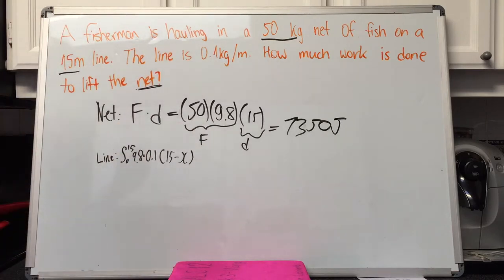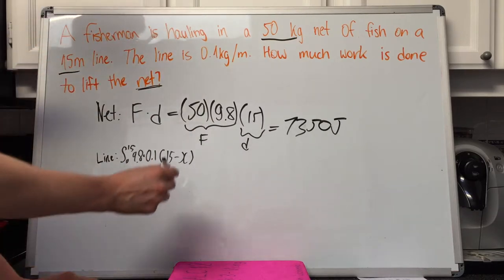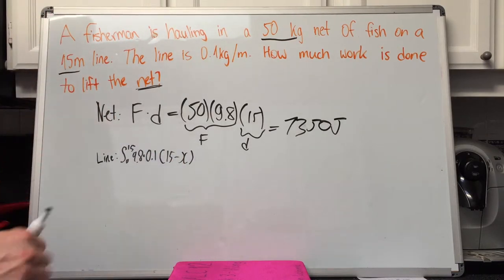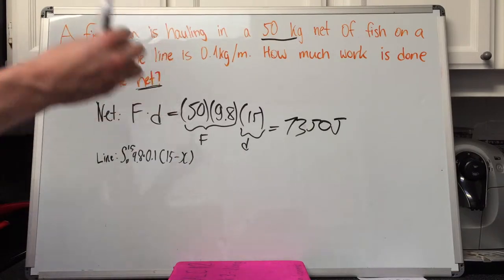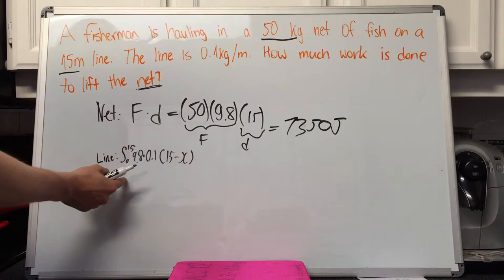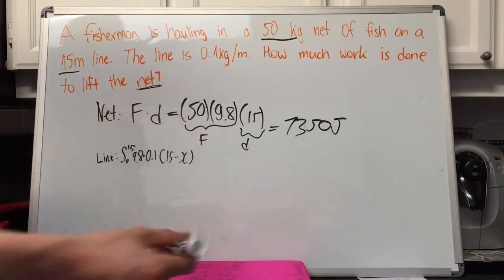The reason we're doing 15 minus x is because at the very end of the line, x equals 15 and there's no more weight left. So while we integrate, we're integrating the amount of line left, and therefore the amount of weight we have to move on the line.